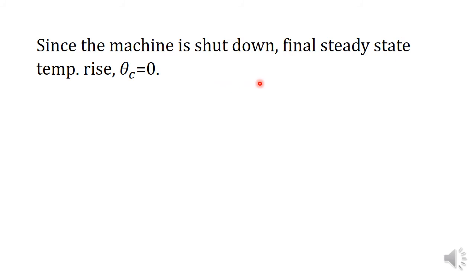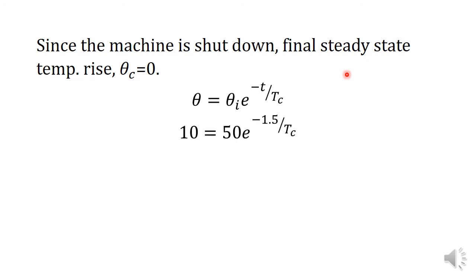Since the machine is shut down and not heated again, it is allowed to cool completely to ambient temperature, so the final steady state temperature rise theta_c equals 0. The cooling equation becomes theta equals theta_i times e raised to minus t by tc. Substituting theta equals 10 degrees Celsius, theta_i equals 50 degrees Celsius, and t equals 1.5 hours, the cooling time constant tc is calculated as 0.932 hours.